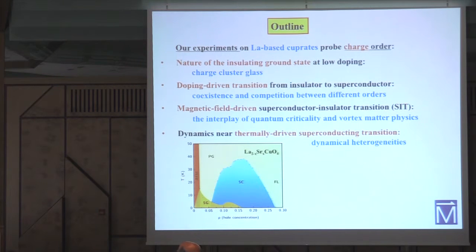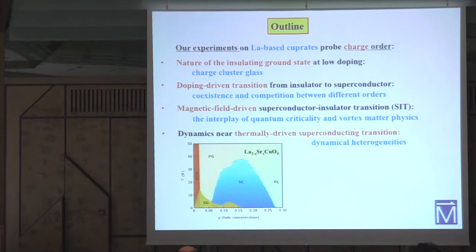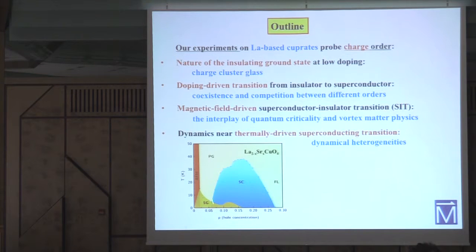Then I will discuss the doping-driven transition from that insulating state into a superconducting state. Magnetic fields are commonly used to probe properties of these materials, but many basic questions have remained open. So we also carried out a study of the magnetic field-driven transition from a highly underdoped superconducting state into the insulating state as a function of field. At the end I will discuss the superconducting transition as a function of temperature at zero field.